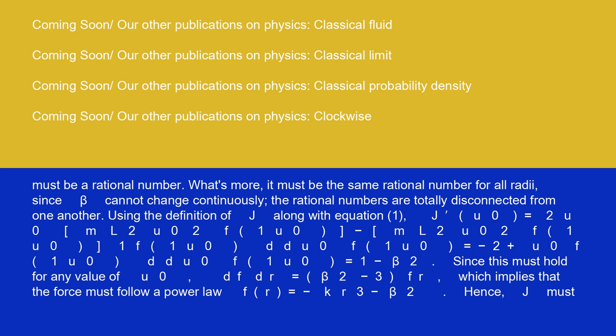Since this must hold for any value of u₀, dF/dr equals (β² minus 3) F/r, which implies that the force must follow a power law: F(r) equals minus k r^(3 minus β²). Hence, J must have the general form.